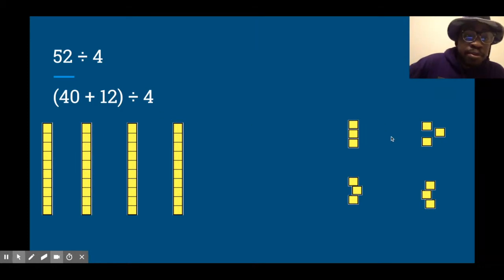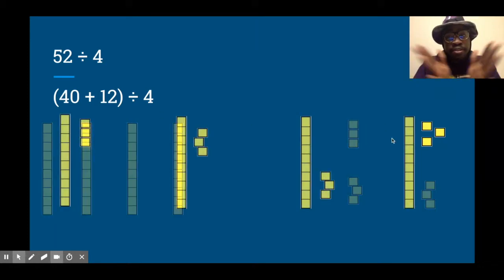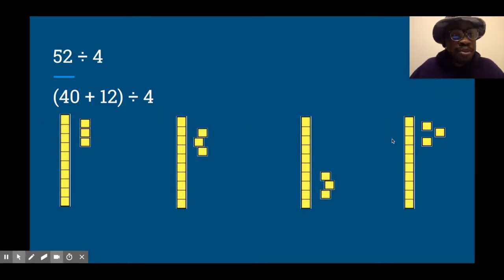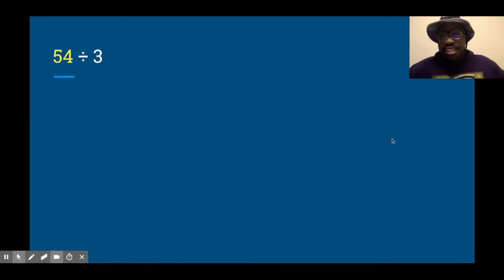All right, let's do another one. Here's another one - 54 divided by 3. Again, we're going to decompose that 54 into smaller numbers, but we want to choose numbers that are going to be easy to divide by 3. This is what I'm going to choose. 54 can be decomposed into 30 and 24.